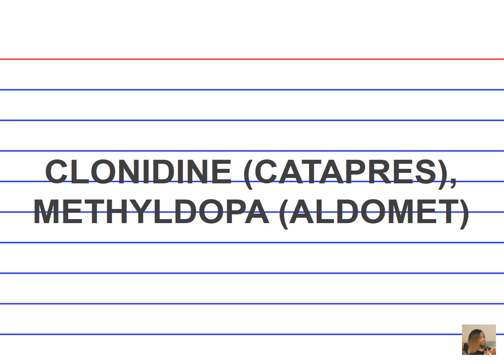Clonidine (Catapres) and methyldopa (Aldomet). What is the drug classification for clonidine and methyldopa? These are alpha-2 agonists. What is the mechanism of action? These have a centrally acting mechanism. What is the indication for administering clonidine and methyldopa? These are second-line drugs for hypertension.